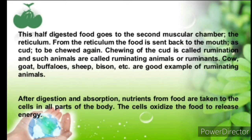This half-digested food goes to the second muscular chamber, the reticulum. From the reticulum, the food is sent back to the mouth as cud to be chewed again. Chewing of the cud is called rumination, and such animals are called ruminating animals or ruminants. Cow, goat, buffalo, sheep etc. are good examples of ruminating animals. After digestion and absorption, nutrients from the food are taken to the cells in all parts of the body.